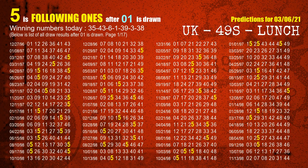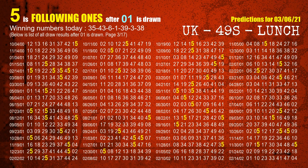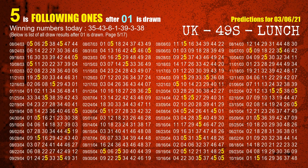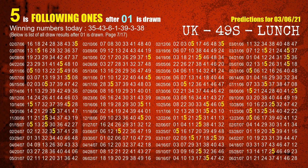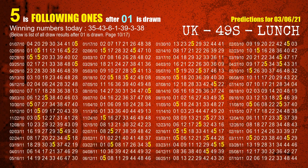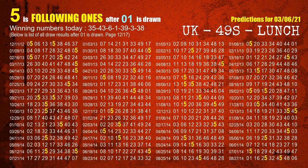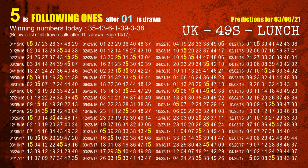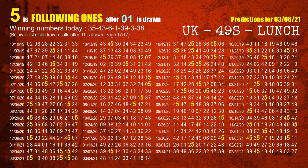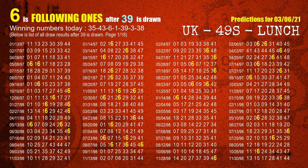The fourth winning number is 01. The most frequently following units digit is 5 when 01 is the winning number in the last draw. The fifth winning number is 39. The most frequently following units digit is 6 when 39 is the winning number in the last draw.